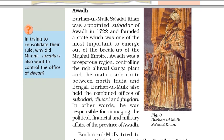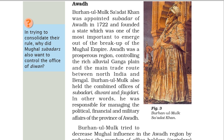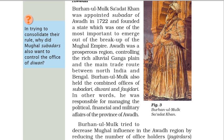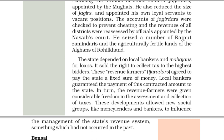Awadh. Burhan-ul-Mulk Sadat Khan was appointed Subadar of Awadh in 1722 and founded a state which was one of the most important to emerge out of the break-up of the Mughal Empire. Awadh was a prosperous region, controlling the rich alluvial Ganga plain and the main trade route between North India and Bengal. Burhan-ul-Mulk also held the combined offices of Subadari, Diwani and Faujdari — in other words, he was responsible for managing the political, financial and military affairs of the province. Burhan-ul-Mulk tried to decrease Mughal influence in the Awadh region by reducing the number of office-holders appointed by the Mughals. He also reduced the size of Jagirs and appointed his own loyal servants to vacant positions. The accounts of Jagirdars were checked to prevent cheating, and the revenues of all districts were reassessed by officials appointed by the Nawab's court. He seized a number of Rajput Zamindaris and the agriculturally fertile lands of the Afghans of Rohilkhand.